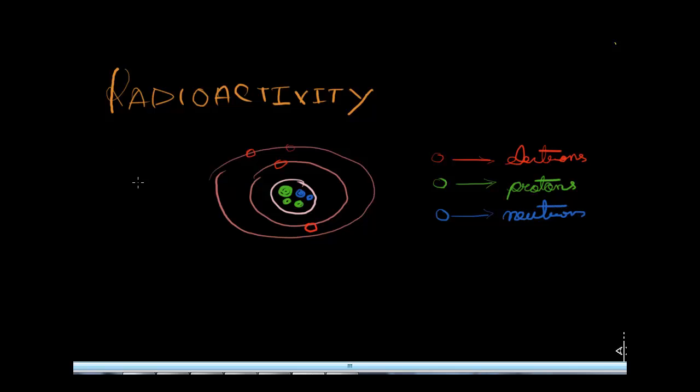As I was saying, in some elements because of the imbalance of the number of protons and the number of neutrons, the nucleus becomes unstable. So they release some extra energy in the form of waves or particles which are called radiations, and this process is called radioactivity.